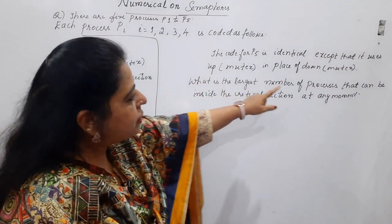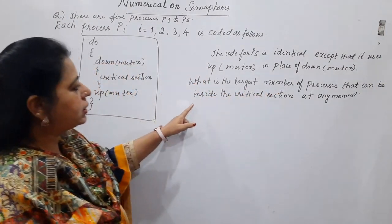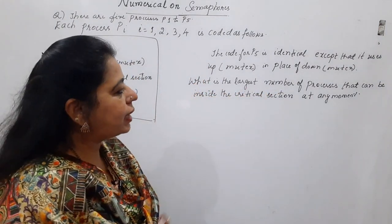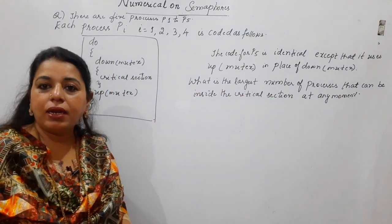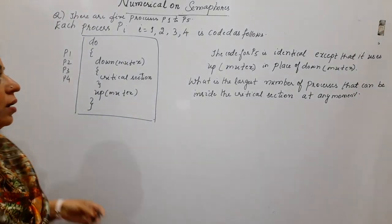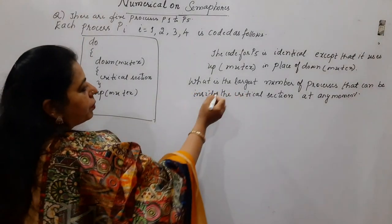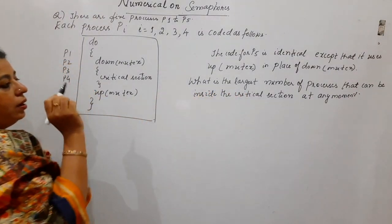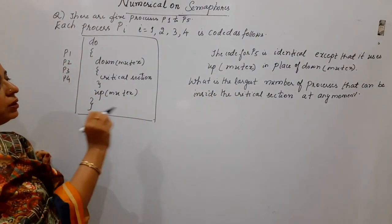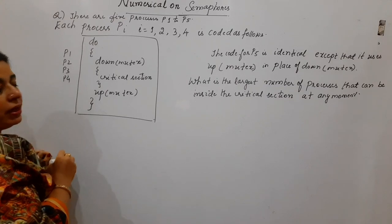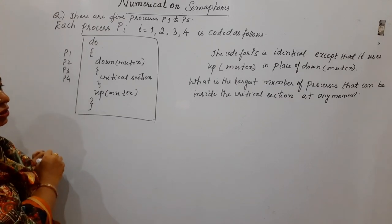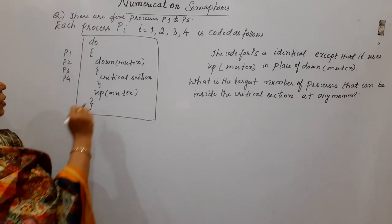What is the largest number of processes that can be inside the critical section at any moment? That is what you have to find out — how many maximum processes can be inside the critical section at any moment.